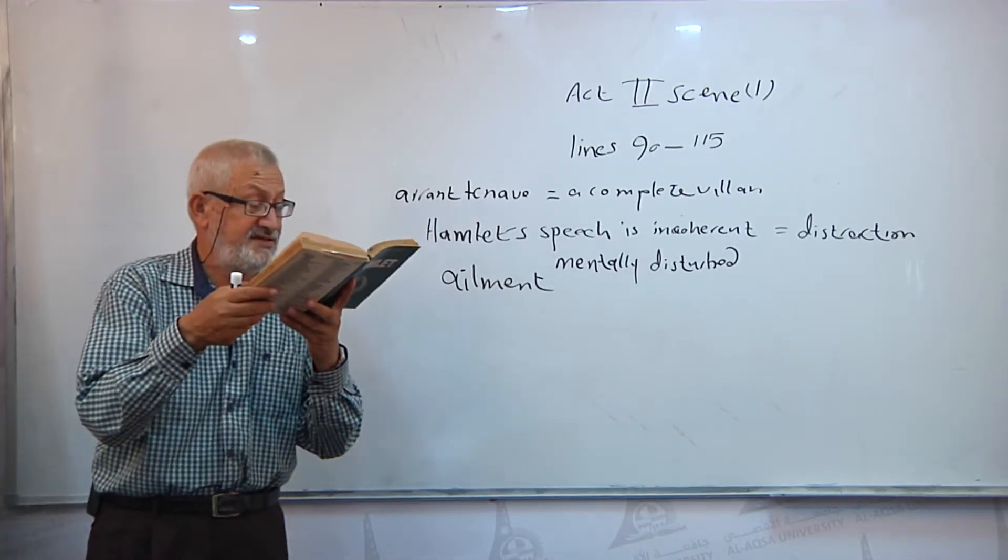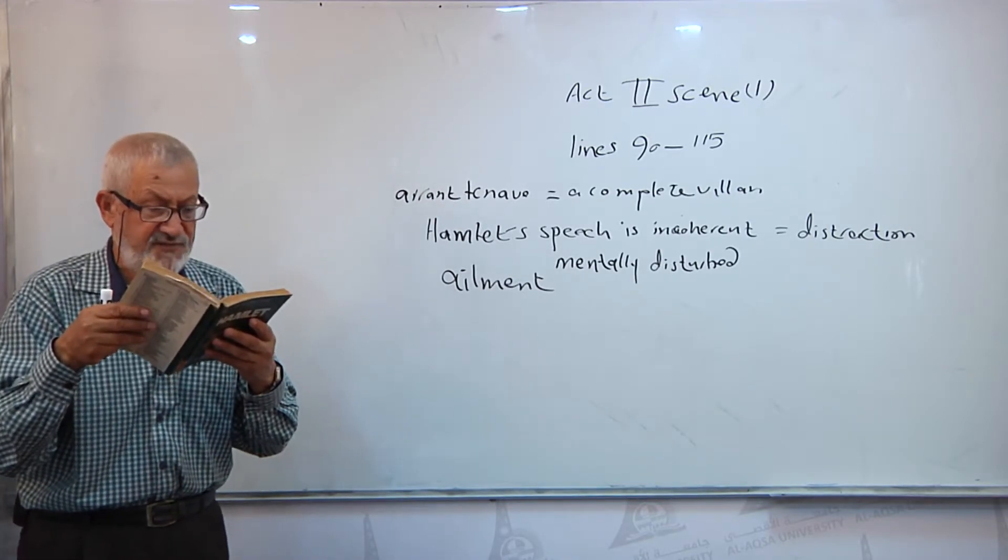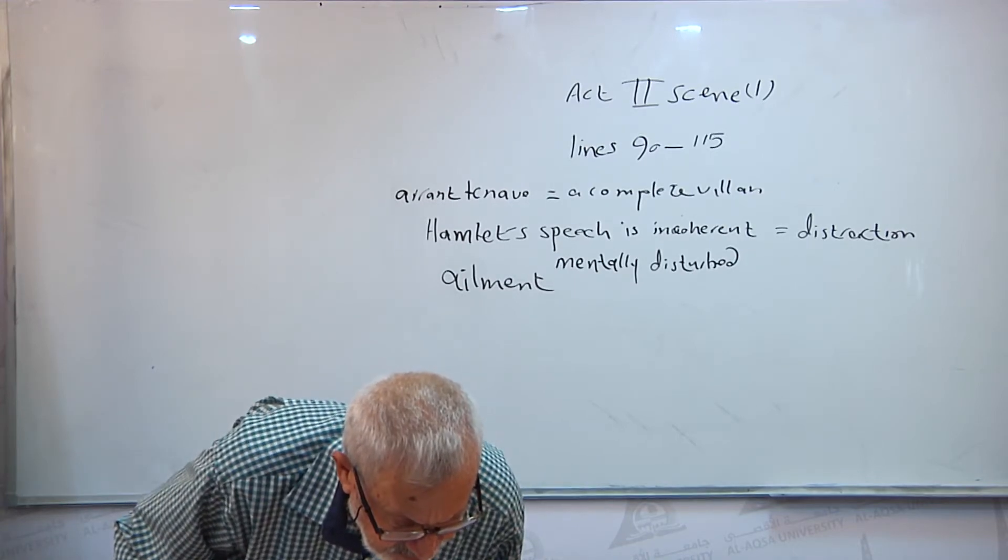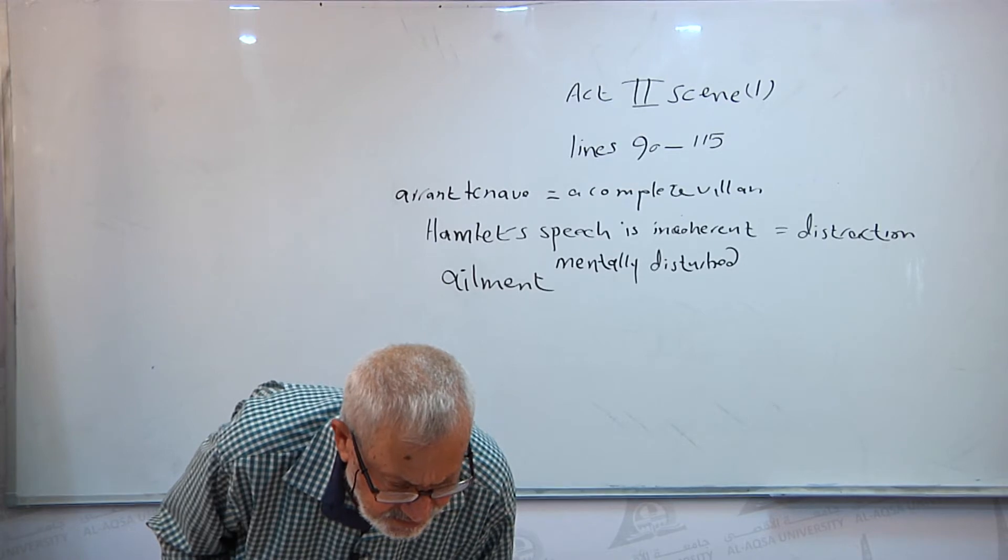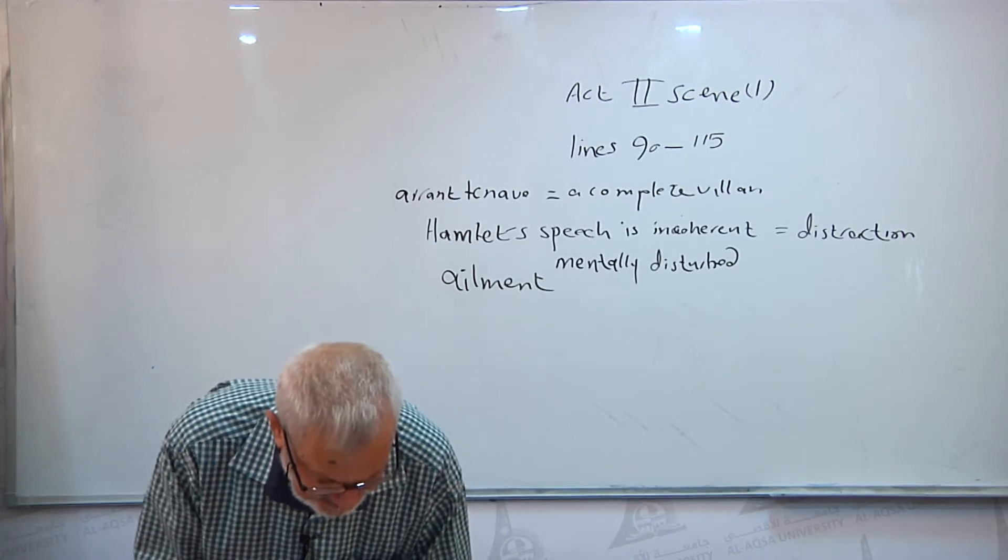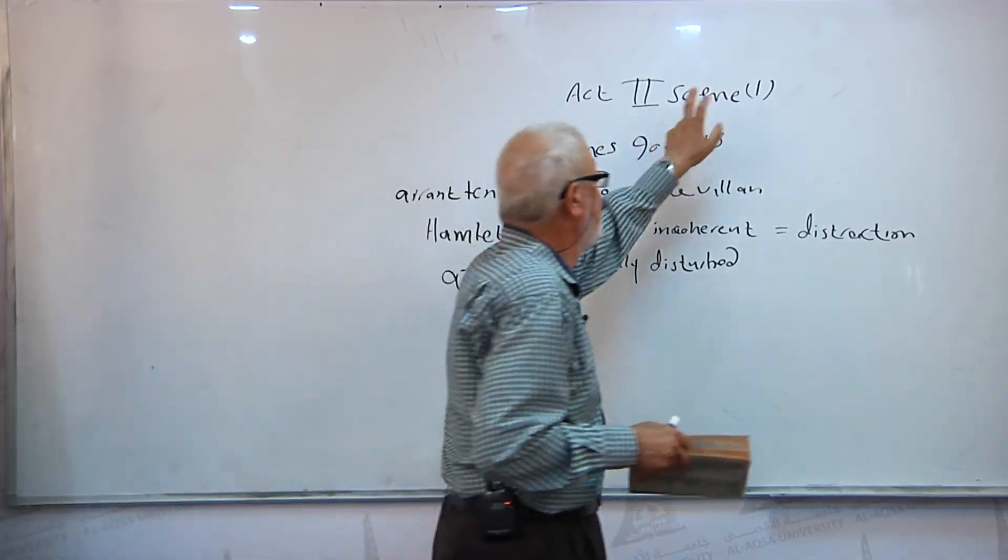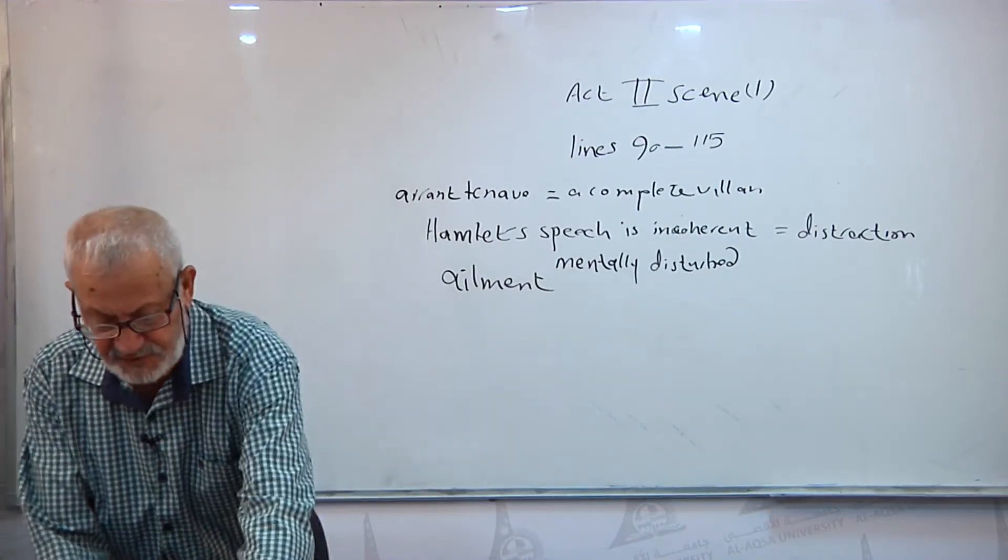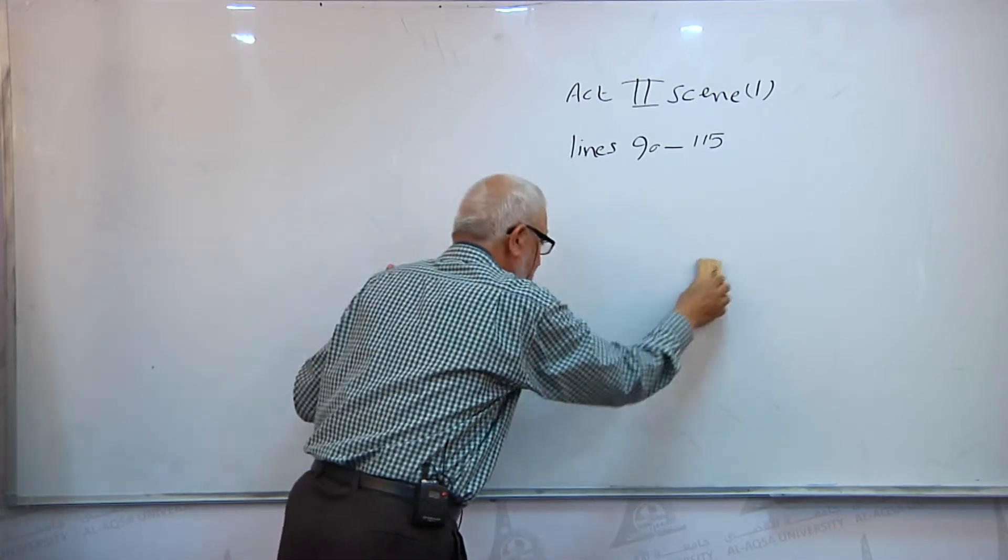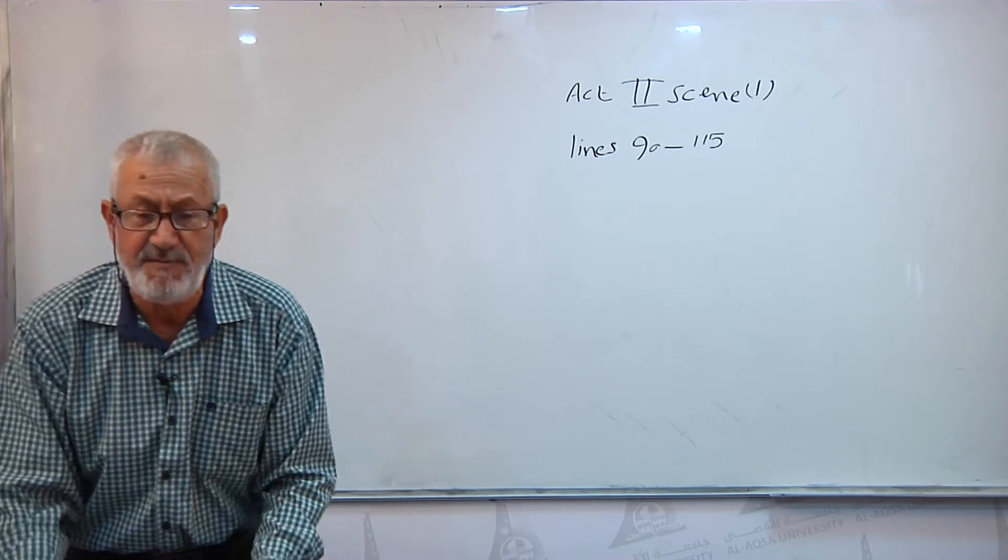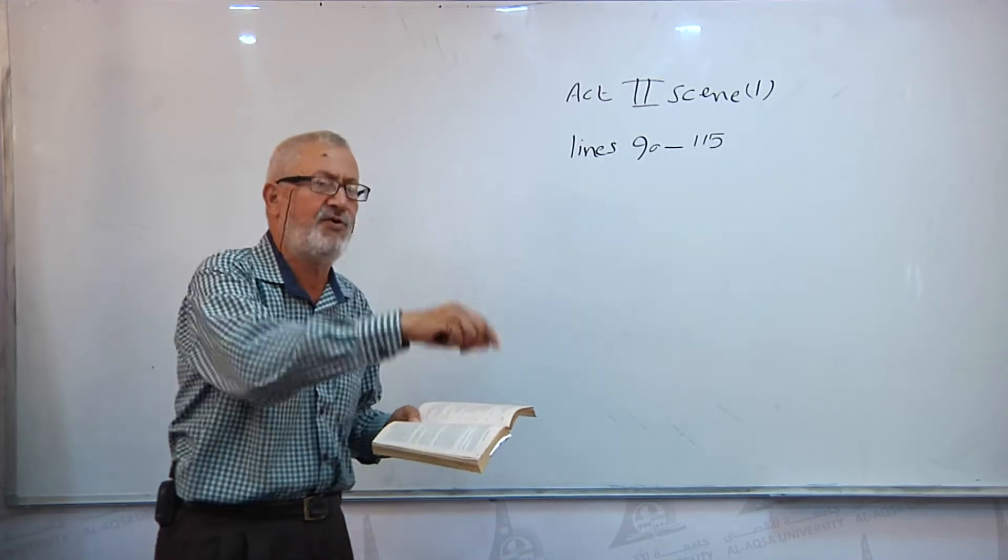Horatio says these are but wild and whirling words, my lord. Hamlet says that he is sorry for that. Now with Act 2, Scene 2, pages 52. We now shift to Act 2, Scene 2, to discuss thereof some parts thereof. We will not go in detail throughout the whole act, but we take some parts, some significant parts, some significant passages, and read together and shed light on the occurrences, the importance of these scenes.